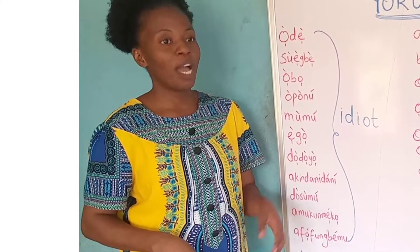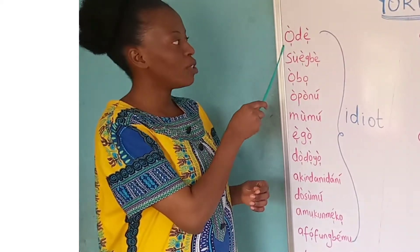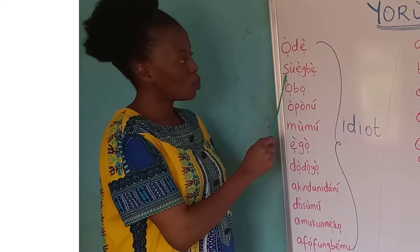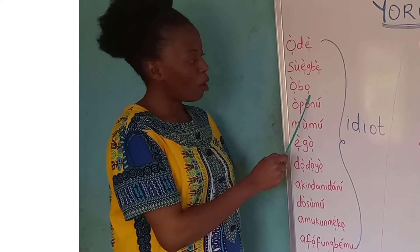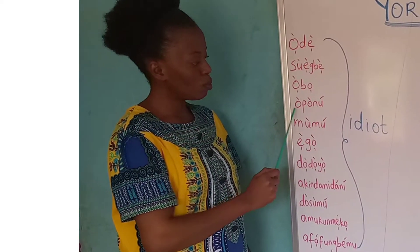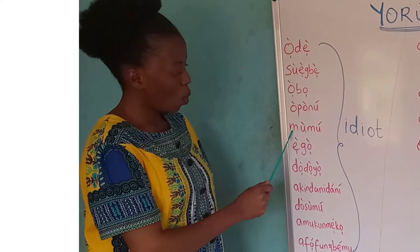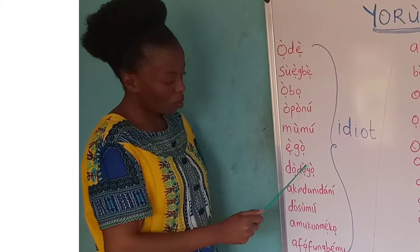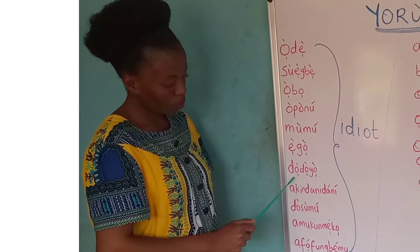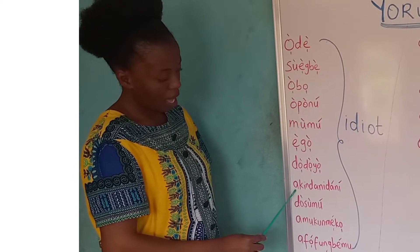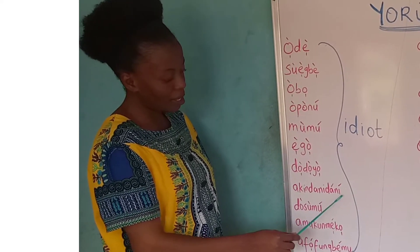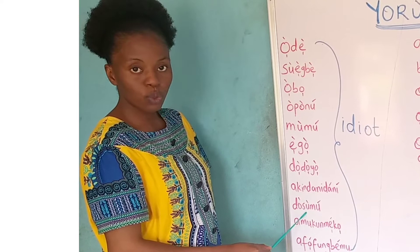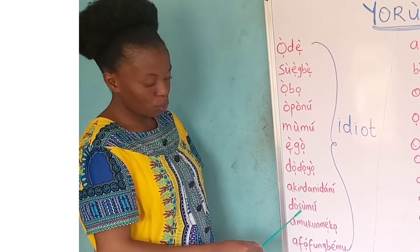We have a lot to learn, as you can see. I want you to learn a lot. The first one is Ode. Ode. Swebe. Swebe. Ovo. Okonu. Okonu. Mumu. Ego. Ego. Dodoyo. Dodoyo. Akidani. Akidani. Dosu mu. Dosu mu.